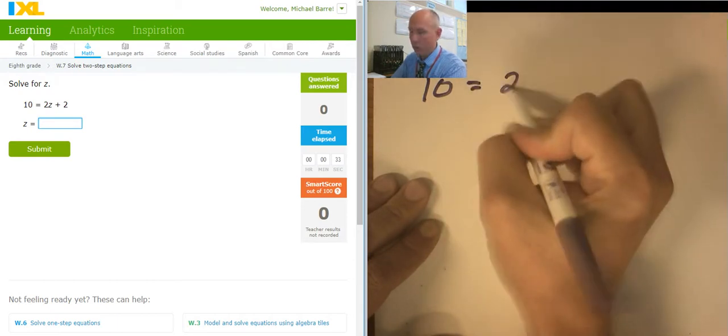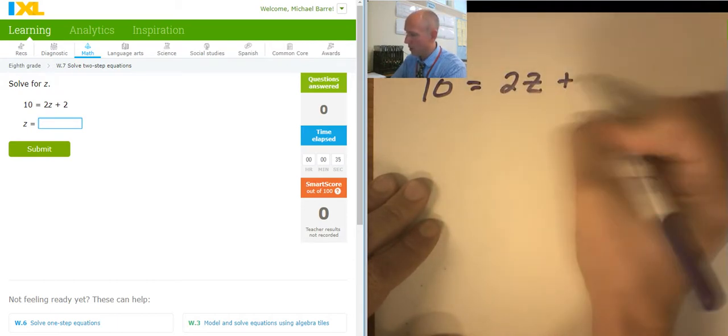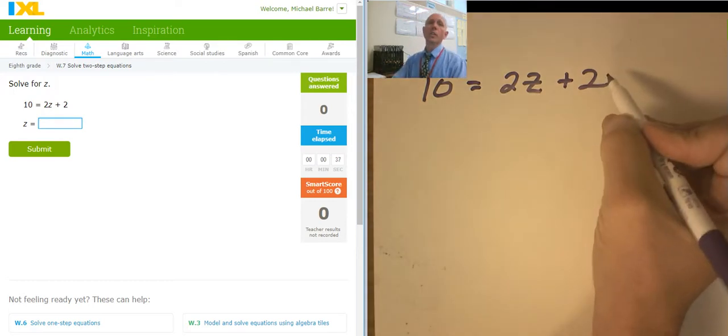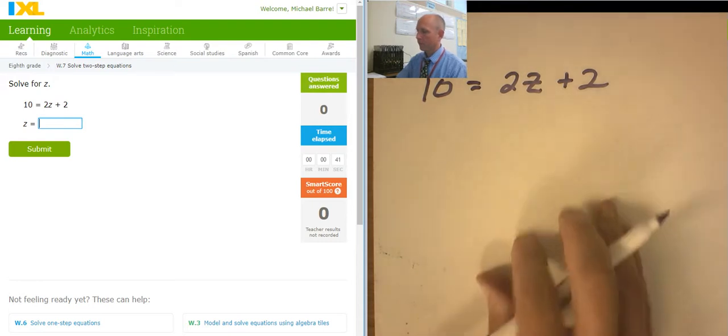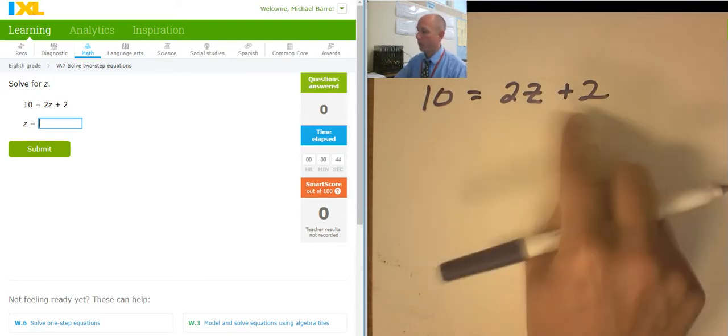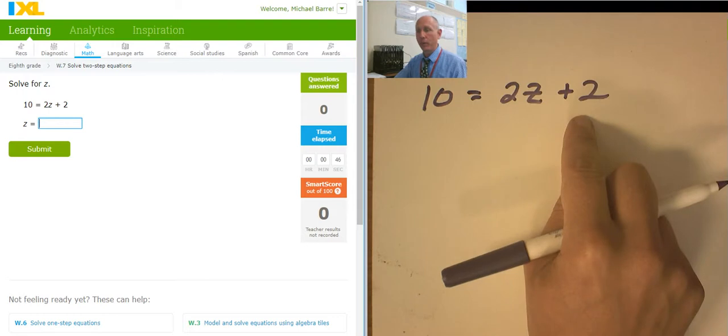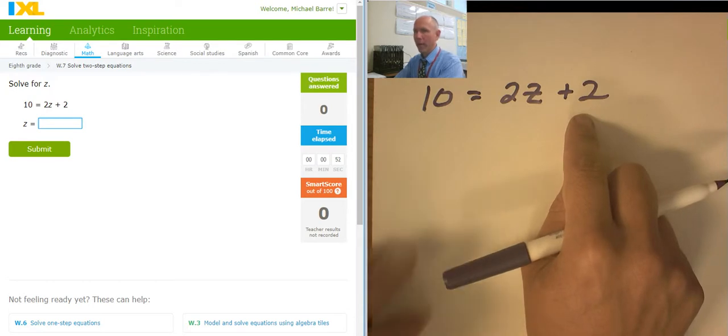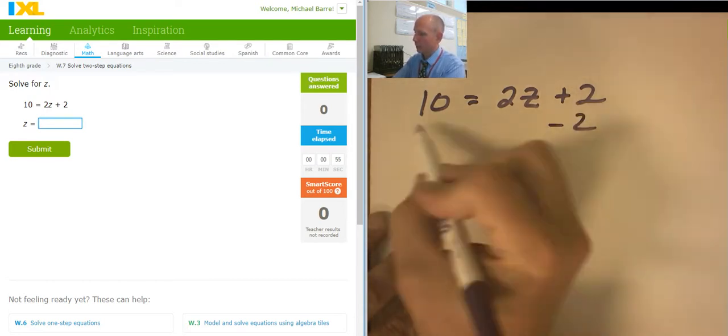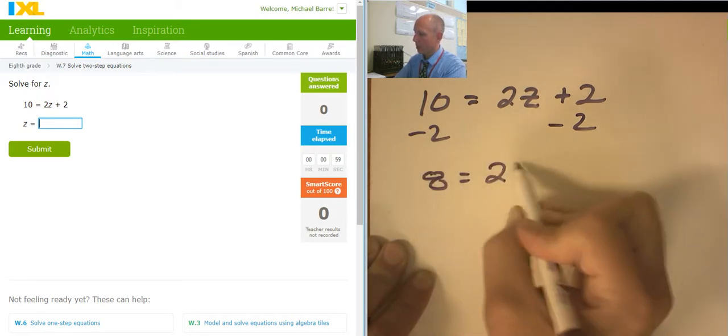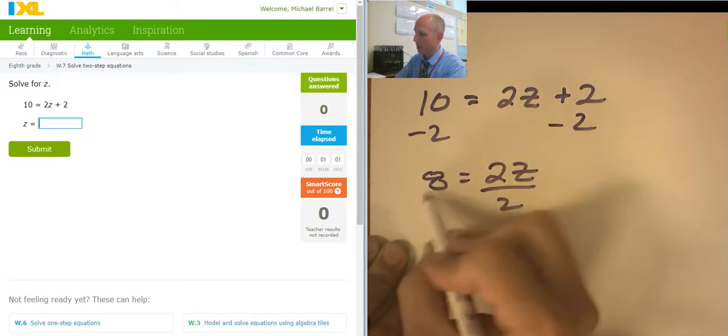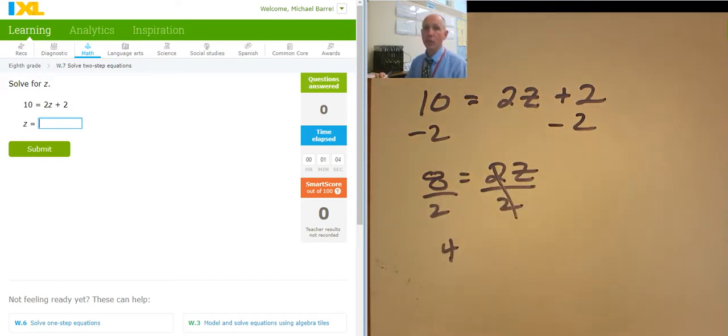So 10 equals 2z plus 2. Who is the variable? z. Who's bugging the variable? 2 and 2. What's this two trying to do? It's trying to multiply. That one is trying to add. Which one should I deal with first? I'm going to deal with this one. Remember in class, I told you to sneak up on the variable, how I did a little skit with a backpack. So I'm going to subtract 2 from both sides, and that's going to give me 8 equals 2 times z, and now I'm going to divide both sides by 2. That's going to give me a 4. So z equals 4.